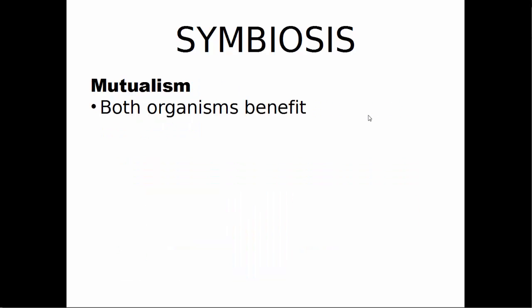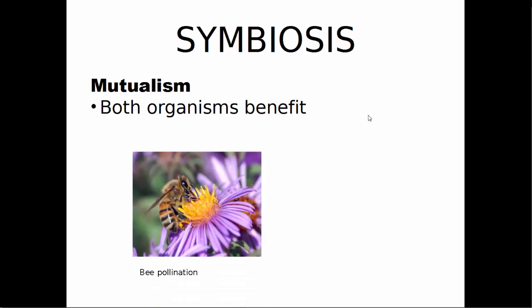Mutualism is a type of symbiosis in which both organisms benefit. A classic example is bees and flowers. Bees need the nectar from flowers to help make honey, and they get pollen on them. They help the flower reproduce by transferring the pollen of one flower to another.